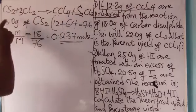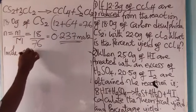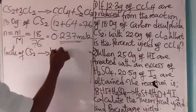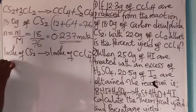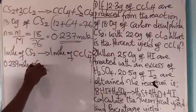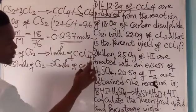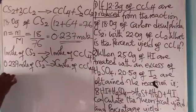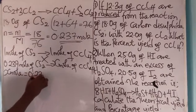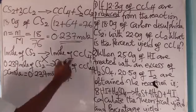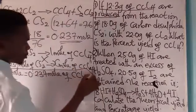Going back to the balanced equation: 1 mole of CS2 produces 1 mole of CCl4. Therefore, 0.237 mol of CS2 will produce x mol of CCl4. Cross-multiplying: x = 0.237 mol of CCl4. This is the yield from carbon disulfide.